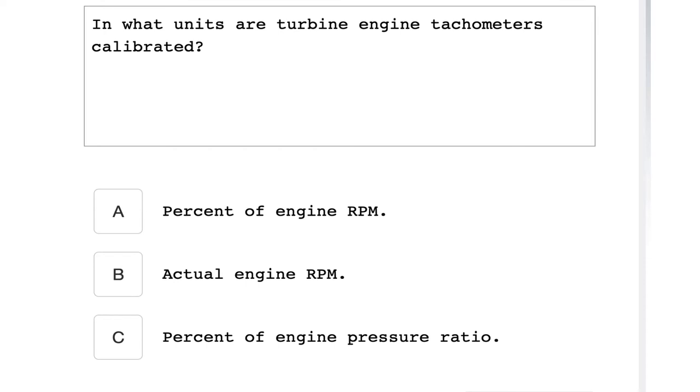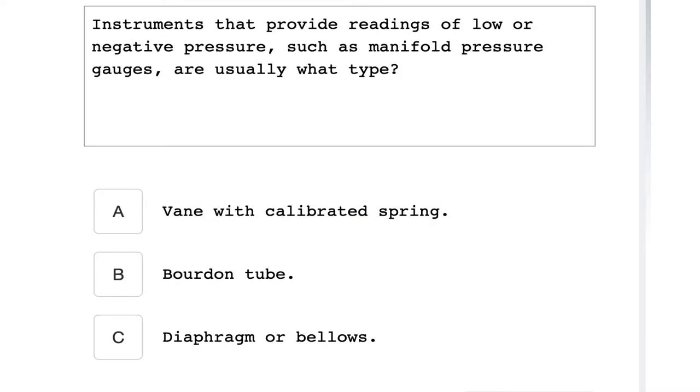In what units are turbine engine tachometers calibrated? Percent of engine RPM. Engine instruments that provide readings of low or negative pressure such as manifold pressure gauges are usually what type? Diaphragm or bellows.